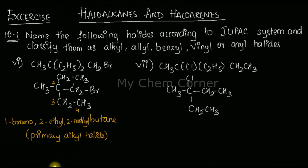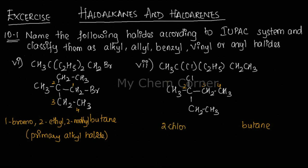When drawing the chain, we consider getting the longest chain and the lowest count for the halogen. Numbering 1-2-3-4, both directions give the same count, so we get a four-carbon parent chain: butane. On carbon two we have a chloro group and an ethyl group. In alphabetical order: 2-chloro-2-ethylbutane.